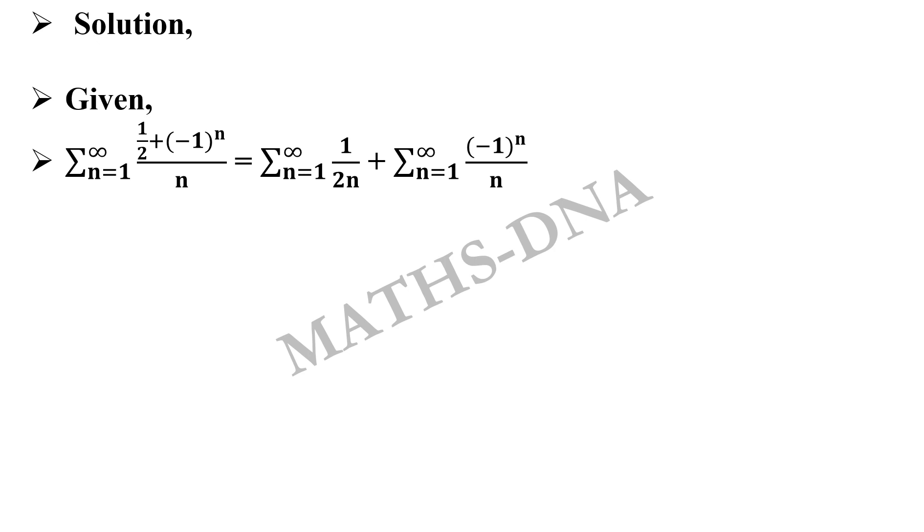Which can be written as summation n from 1 to infinity 1/(2n) plus summation n from 1 to infinity (-1)^n/n. Here we got two series and we separately check the convergence and divergence of both of these series.